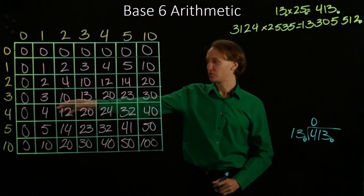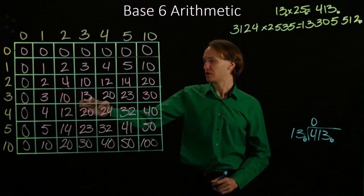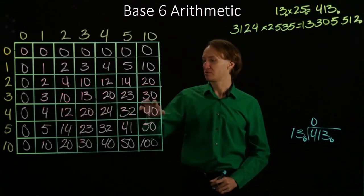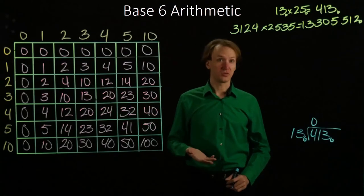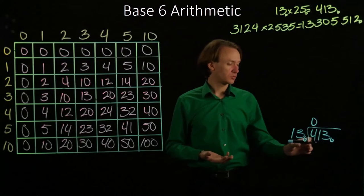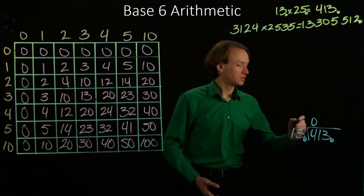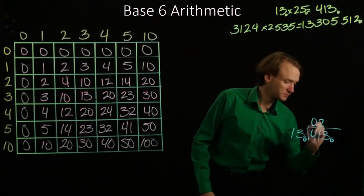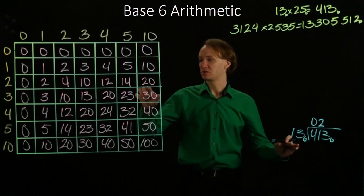But what happens if I do 3 times 13 instead? 3 times 3 is 13, plus 3 times 10, which is 30. That would give me 43. But 43 is larger than 41, so 13 does not divide into 41 at least 3 times. So I'll put the 2 here, and I saw that 2 times 13 was 30.